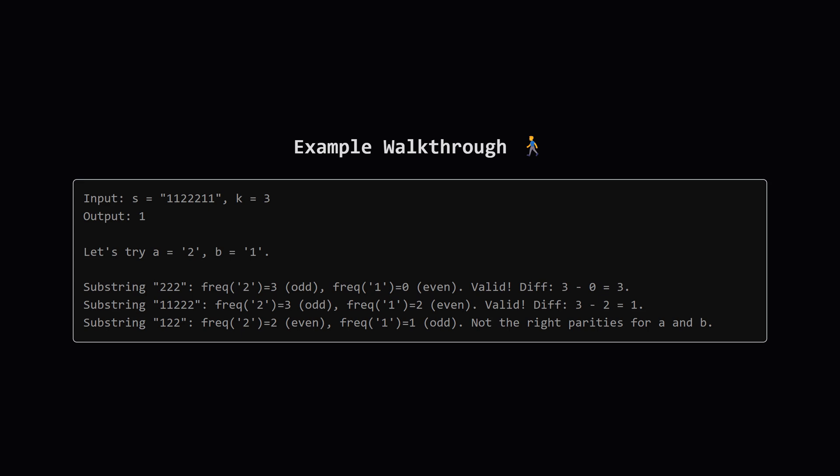If we look at the substring 222, the count of 2 is 3, which is odd. The count of 1 is 0, which is even. Perfect. The score is 3 minus 0, which is 3. That's a great starting score.